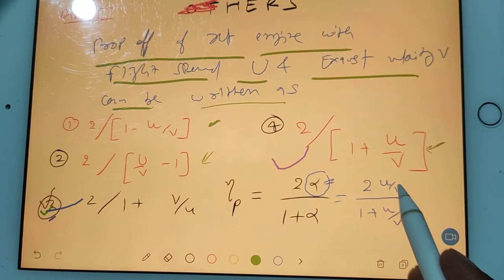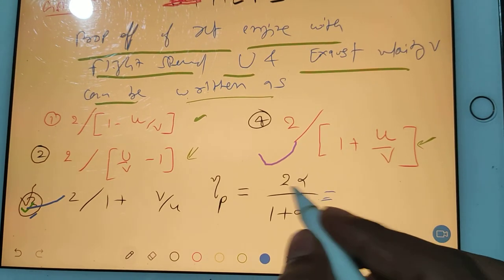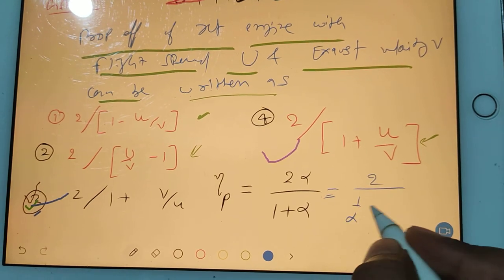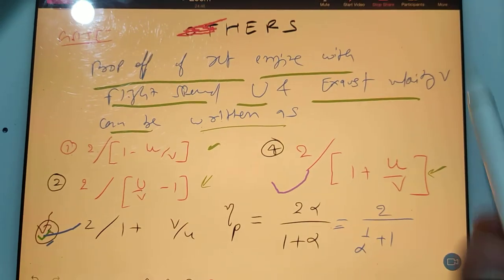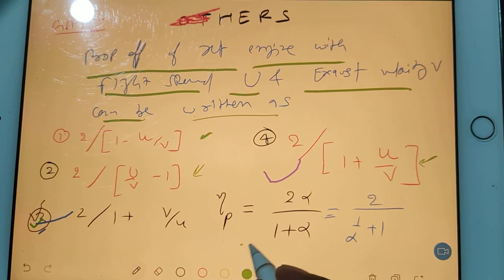So 2/(1/α + α), right? I hope you guys are getting it. So then here you substitute alpha value, alpha is u/v, so here v/u.